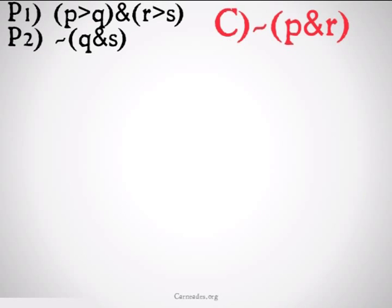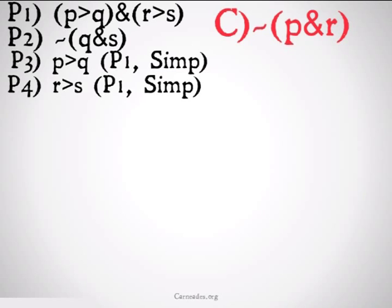The great thing about conjunctions is we can split them up and get new premises. That'd be the first thing I would do. So, premise one, simplification, P implies Q. Premise one, simplification, R implies S.